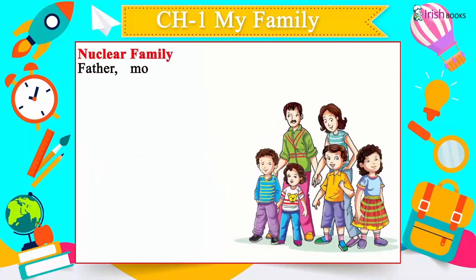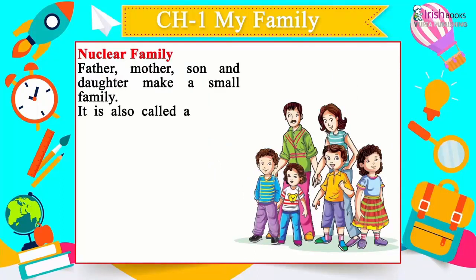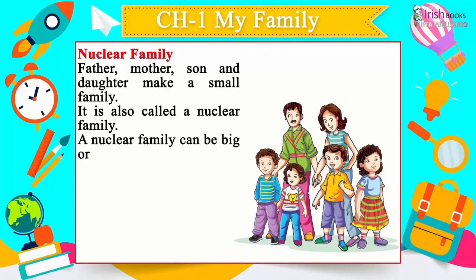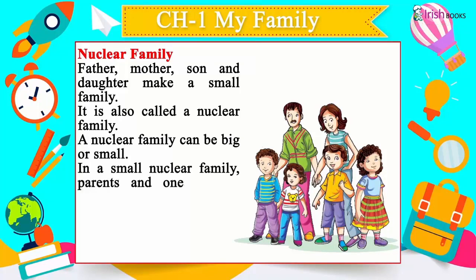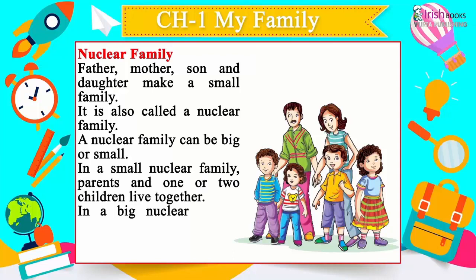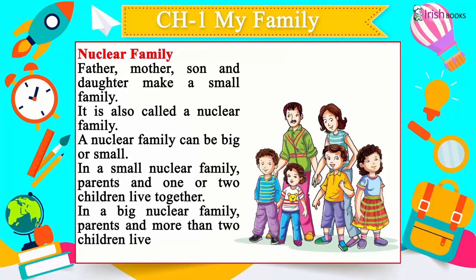Nuclear Family: Father, mother, son and daughter make a small family, also called a nuclear family. A nuclear family can be big or small. In a small nuclear family, parents and one or two children live together. In a big nuclear family, parents and more than two children live together.